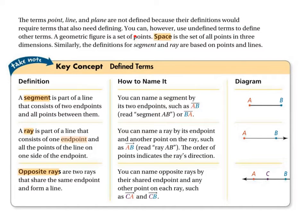A geometric figure is a set of points. For example, a sphere can be described as an infinite series of points all equidistant from its center. Space is the set of all points in three dimensions — length, width, and height — going on forever theoretically. Do a mind experiment where you imagine something never, ever ending, going in the same direction forever. All the locations that a point could be in the universe make up what we call space.